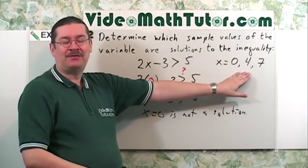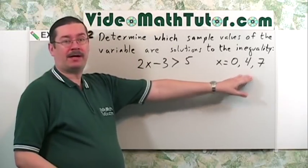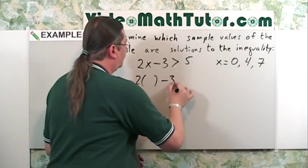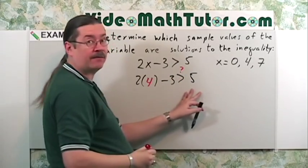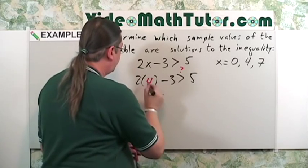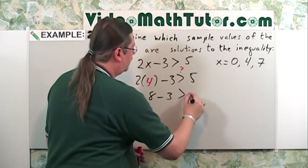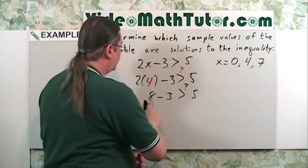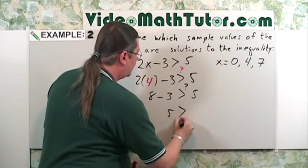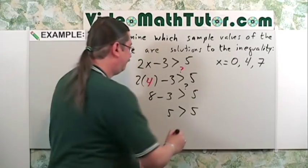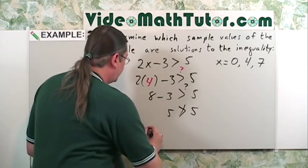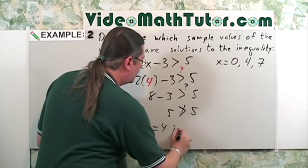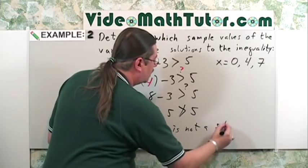Now let's do the next value of x. Let's let x equal 4. I'm going to put 4 in place of the x. 2 times 4 is 8, minus 3. Is that greater than 5? 8 minus 3 is 5. Is 5 greater than 5? No — 5 is not greater than 5, 5 is equal to 5. Therefore, x equals 4 is not a solution.